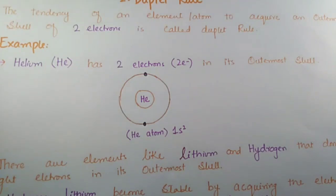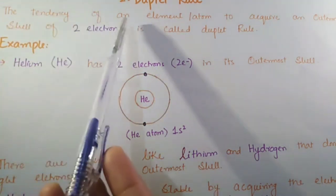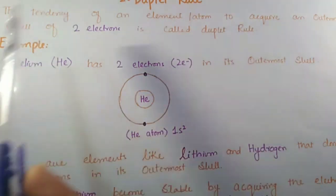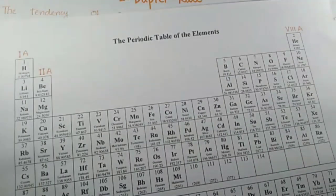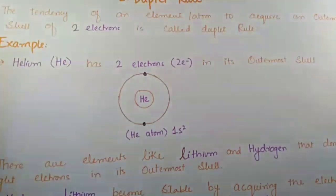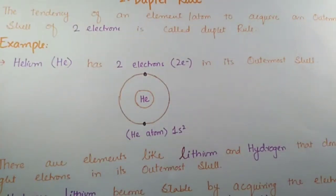Now we will talk about the duplet rule. Duplet rule has a similar definition but the difference is the electron number. It is the tendency of an element atom to acquire an outermost shell of two electrons. In noble gases, the first noble gas is helium. Helium has two electrons in its outermost shell, which means its duplet is complete. It does not need any electron because its outermost shell is complete.